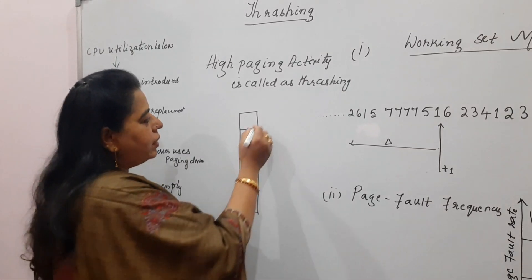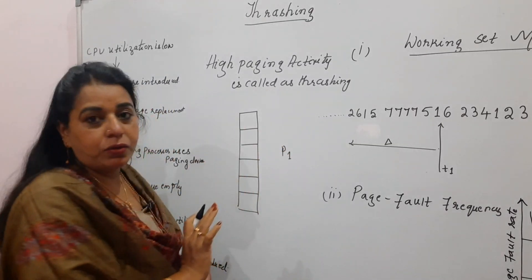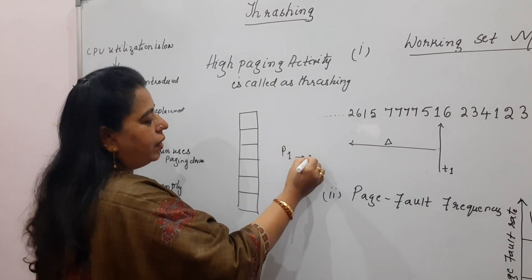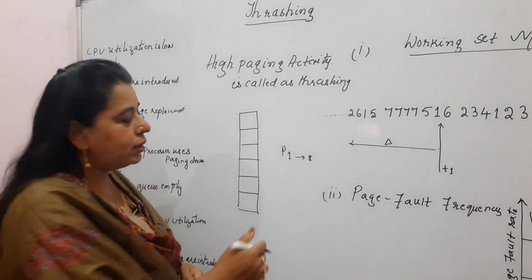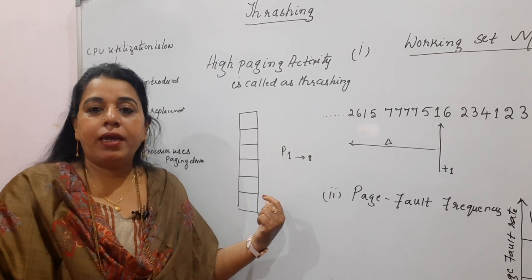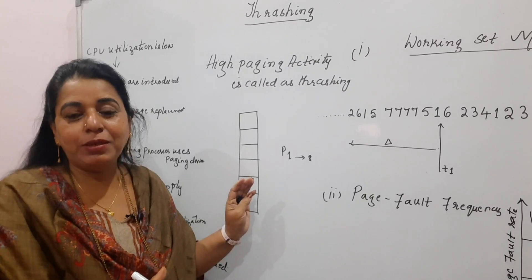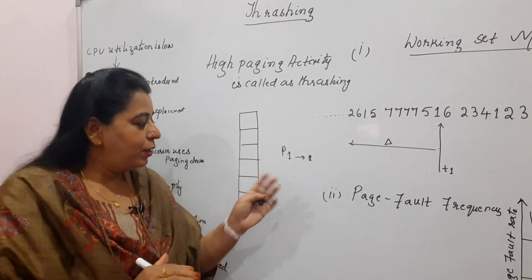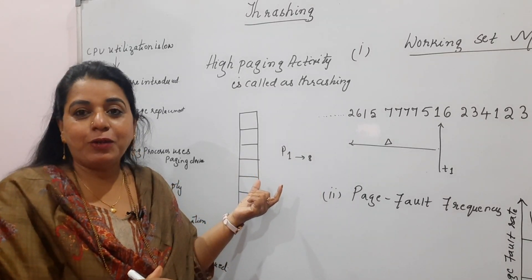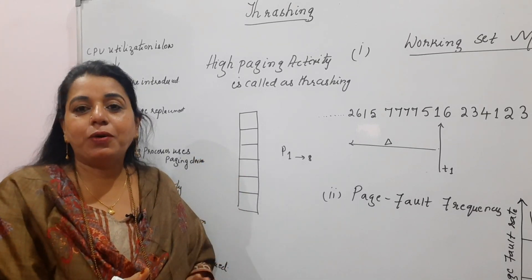Suppose there is one single process P1 getting executed — P1's pages will be loaded into memory. P1 has, let us take for example, 8 pages totally. The memory itself we assume to be very small, having only 6 frames, and those 6 frames are allotted to process P1. P1 actually has 8 pages but gets 6 frames, so most of its contents are in main memory and execution goes on smoothly.